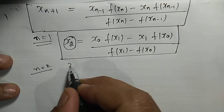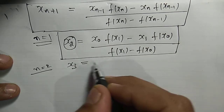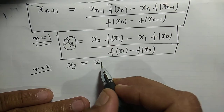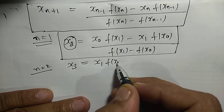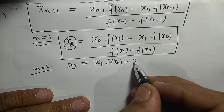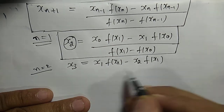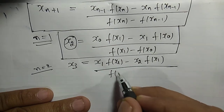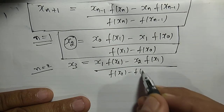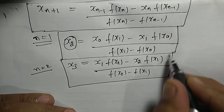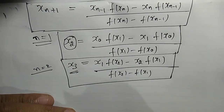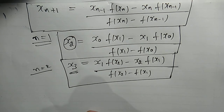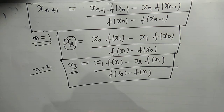If n = 2, then x_3 = [x_1 · f(x_2) − x_2 · f(x_1)] / [f(x_2) − f(x_1)]. This is the solution for the second iteration. Note that in the Newton-Raphson method we need only one initial approximation, but for the Secant Method we need two initial approximations to start the iteration.